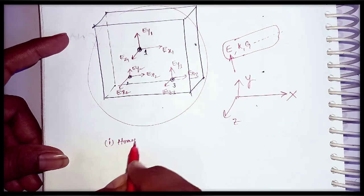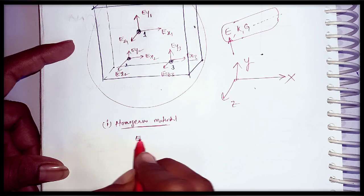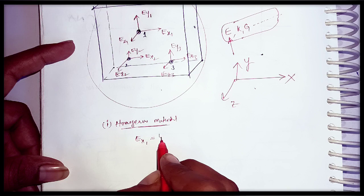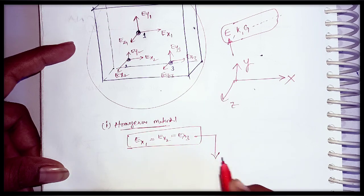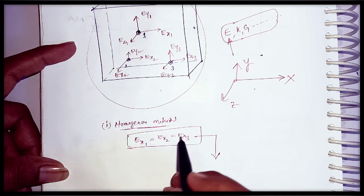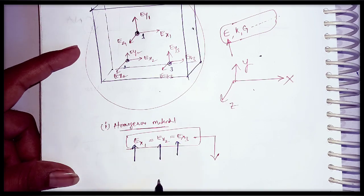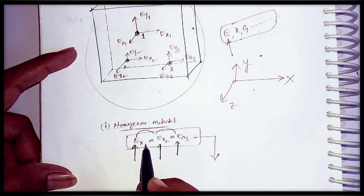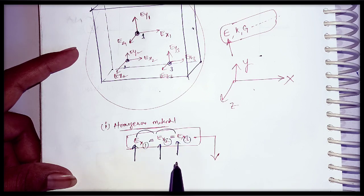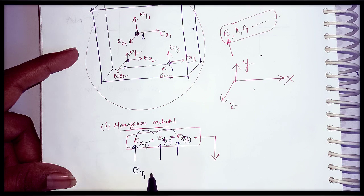For a homogeneous material, the condition is: Ex1 = Ex2 = Ex3. From this condition I will define homogeneous material. Here E is nothing but a material property. I am equating the material property at three different points in the x-direction. We can also write Ey1 = Ey2 = Ey3 — in the y-direction all material properties are equal.